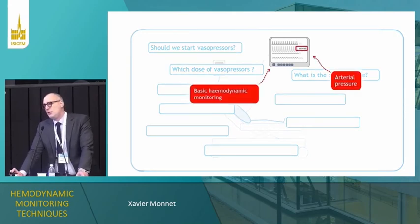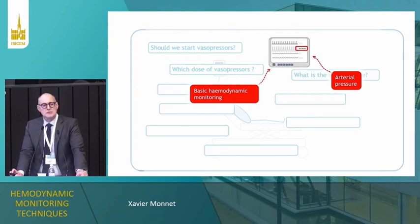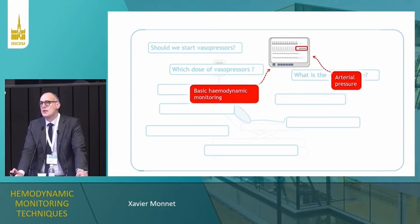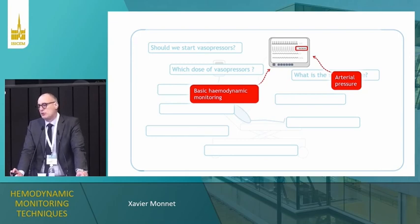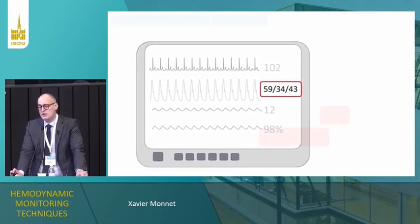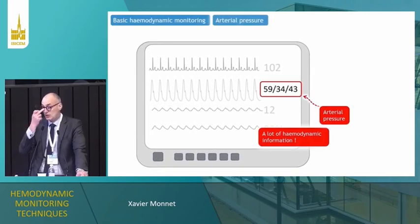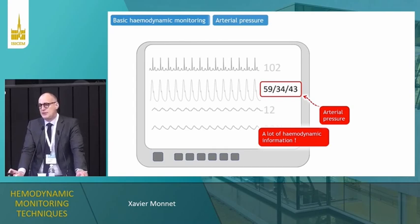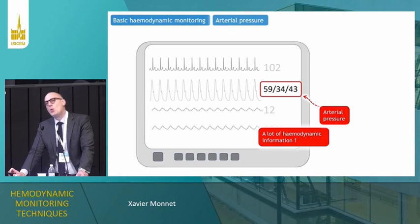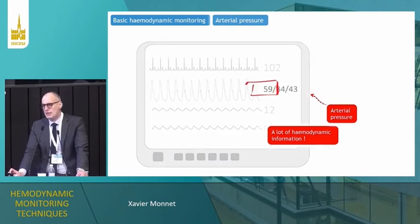The key point here is likely the importance of arterial pressure. I think one often misses the importance of blood pressure, because blood pressure — which is the most important hemodynamic variable we have under our eyes — contains a lot of hemodynamic information. But not only the mean arterial pressure; all the numbers are important.